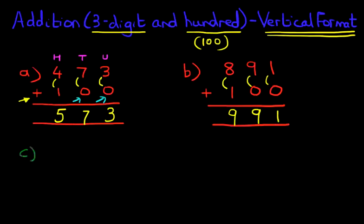Now for our final example. So suppose you have this question in a test, 997 plus 100. I'm sure you can work out the answer. But the question says you have to do this in the vertical format.